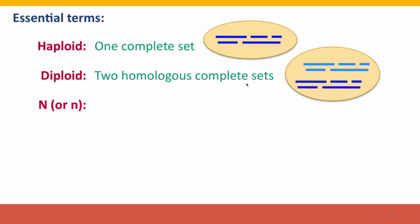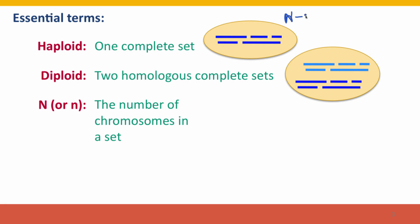A diploid cell has two homologous complete sets. Here I've drawn two sets — each set has the same number of chromosomes with the same lengths, shown in different shades of the same color to help remember they're different versions of the same chromosomes. A third useful term is n, the number of chromosomes in a set. This haploid set has n equals 5, and this diploid set also has n equals 5, or we could write 2n equals 10 to describe it.